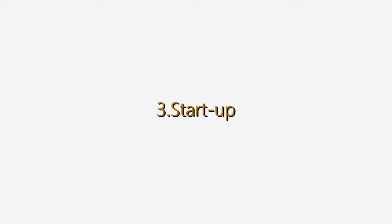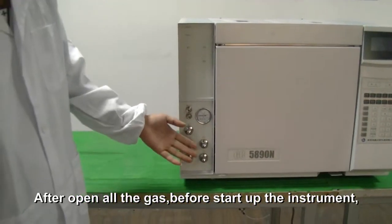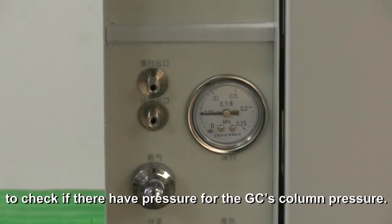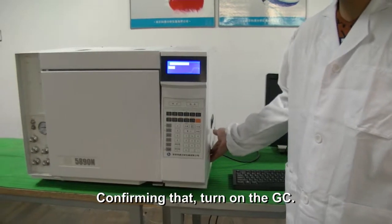Startup: After opening all the gas, before starting up the instrument, observe the front side left pressure gauge to check if there is pressure for the GC's column pressure. After confirming that, turn on the GC.